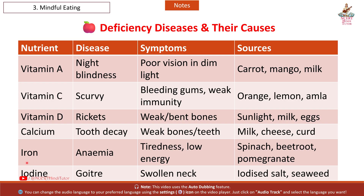Next nutrient: Iron. Disease: Anemia. Symptoms: tiredness, low energy. Sources: spinach, wheat, pomegranate. Next nutrient: Iodine. Disease: Goiter. Symptoms: swollen neck. Sources: iodized salt, seaweed.